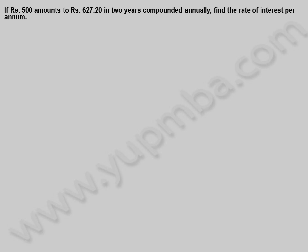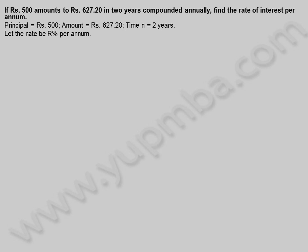If 500 rupees amounts to 627.20 rupees in 2 years compounded annually, find the rate of interest per annum. Principal is equal to 500 rupees, amount is equal to 627.20 rupees, time n is equal to 2 years. Let the rate be rate percentage per annum. Amount is equal to principal into 1 plus rate by 100 whole power n.